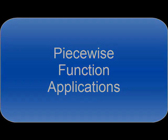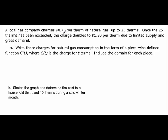This video will talk about piecewise function applications. A local gas company charges 75 cents per therm of natural gas up to 25 therms. Once the 25 therms are exceeded, the charge doubles to $1.50 per therm due to limited supply and great demand. Write these charges for natural gas consumption in the form of a piecewise defined function C(t), where C(t) is the charge for t therms.